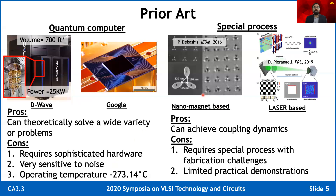Scientists are working to figure out how to achieve coupling dynamics that work at room temperature, and some very interesting research is happening in these fields. For example, in one work, nanomagnets were used to achieve coupling dynamics, where the distance between the magnets determines the coupling strength. Another work used laser and photonics to achieve the coupling dynamics. The caveat is this kind of approach may require a special process, which adds fabrication challenges. Moreover, we have not seen many system-level implementations solving a large number of problems yet, but hopefully more research will emerge in the near future.